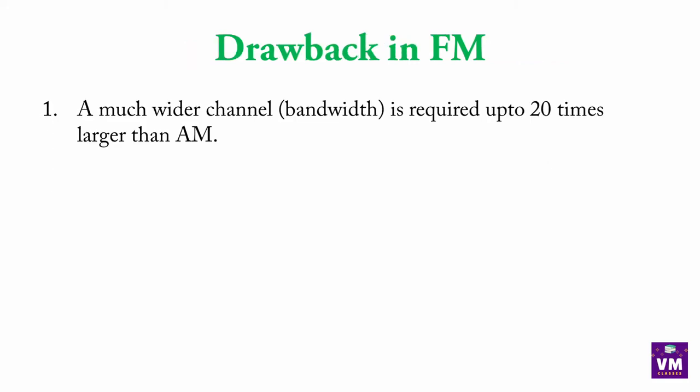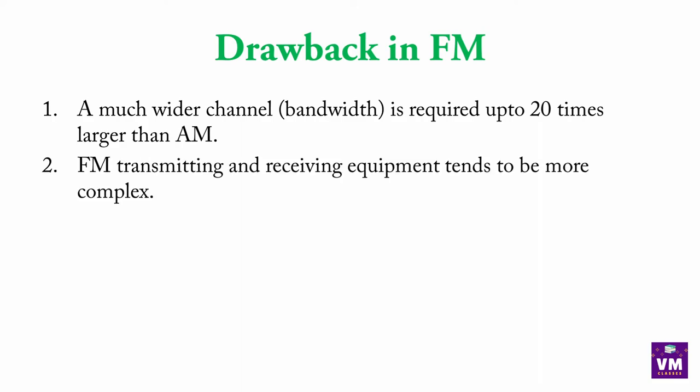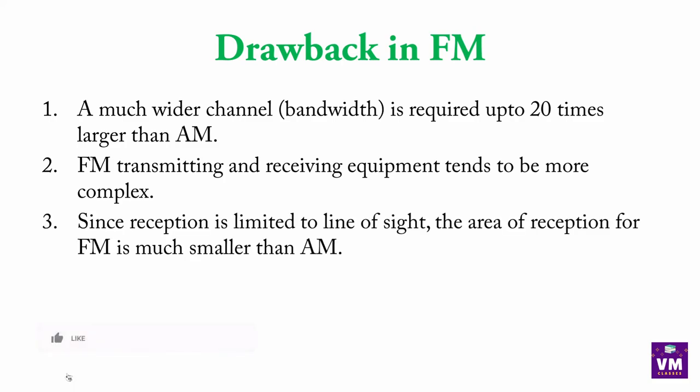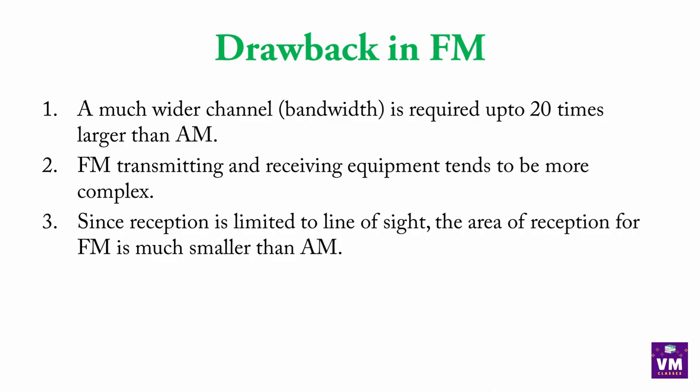Drawbacks of FM: A much wider channel is required — up to 20 times larger than AM. FM transmitting and receiving equipment tends to be more complex. Since reception is limited to line of sight, the area of reception for FM is much smaller than AM. Yeh tha pura Frequency Modulation ke baare mein. Agar koi doubts hain toh comment section mein poochhe, video like aur share karein aur channel ko subscribe zaroor karein. Thank you.